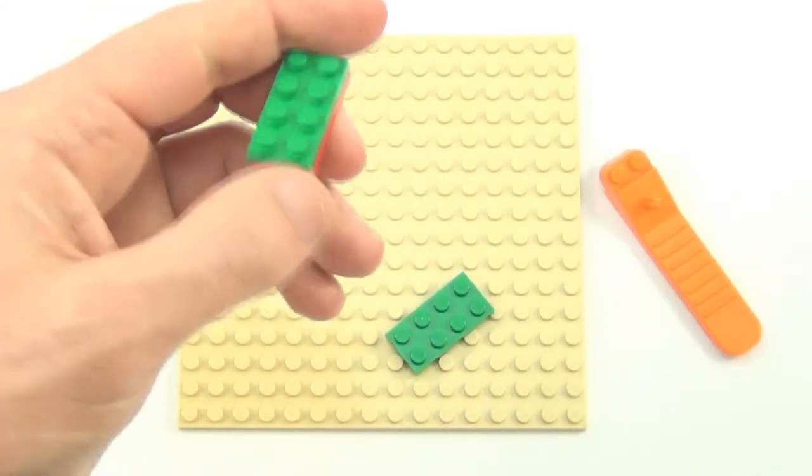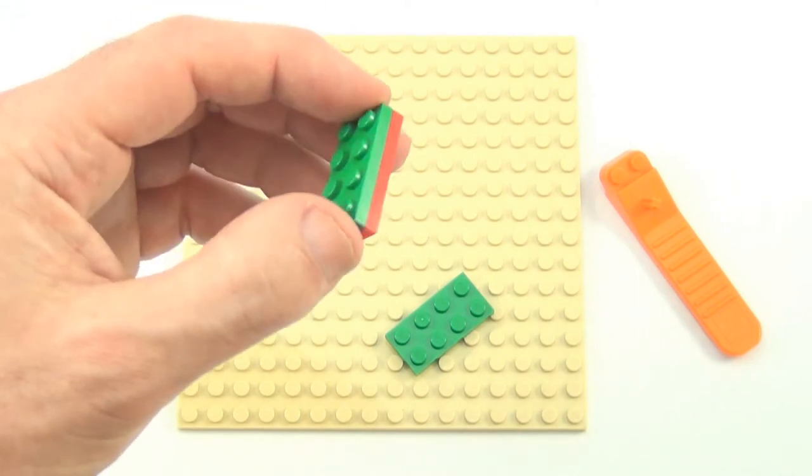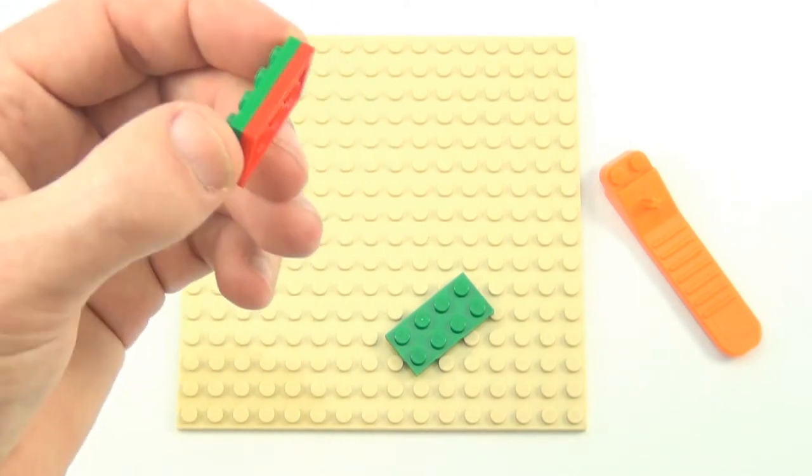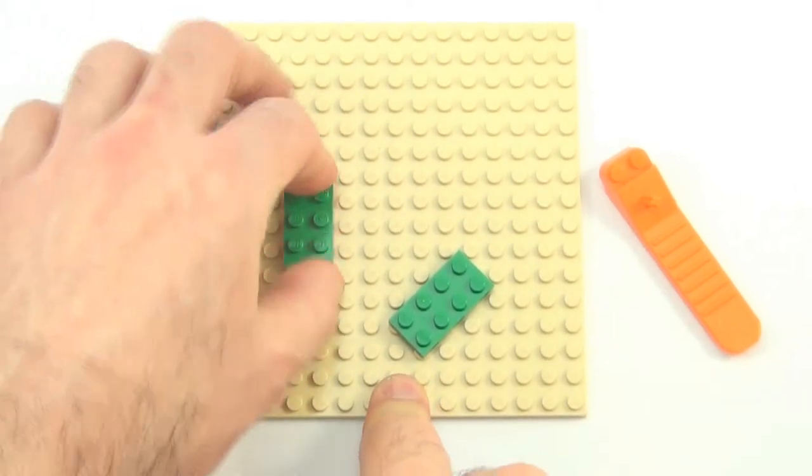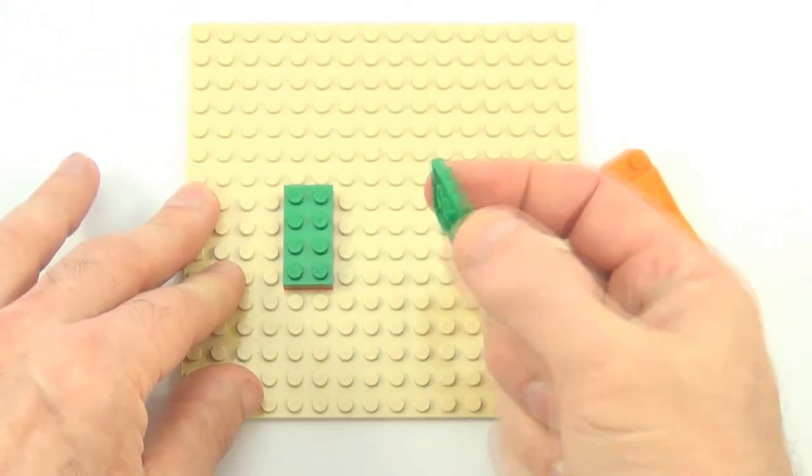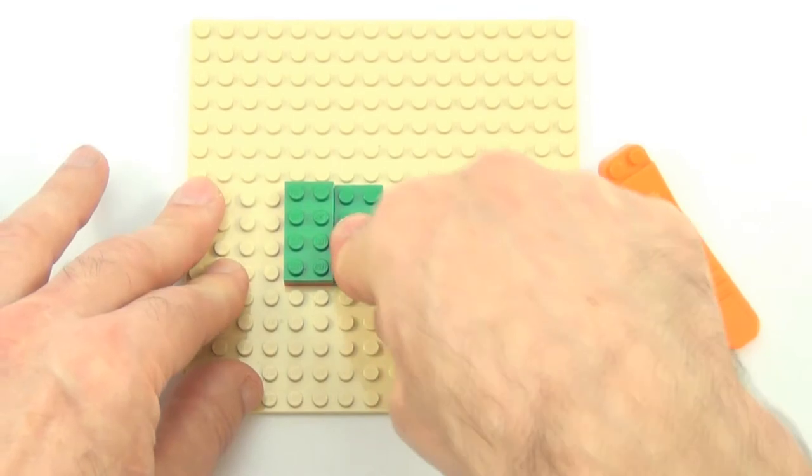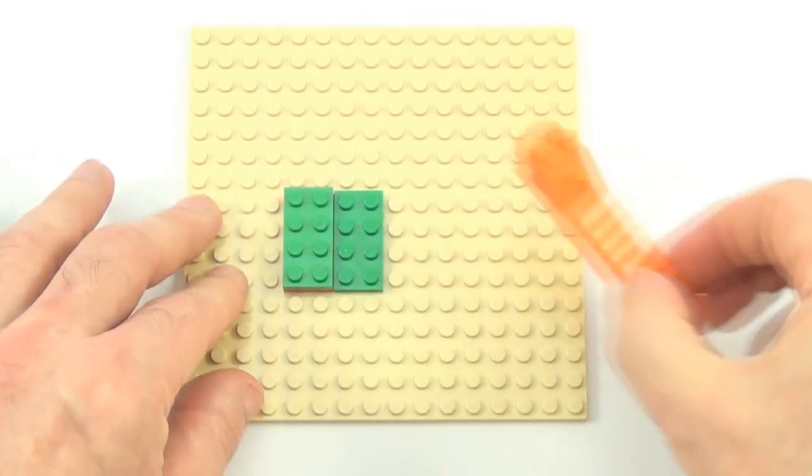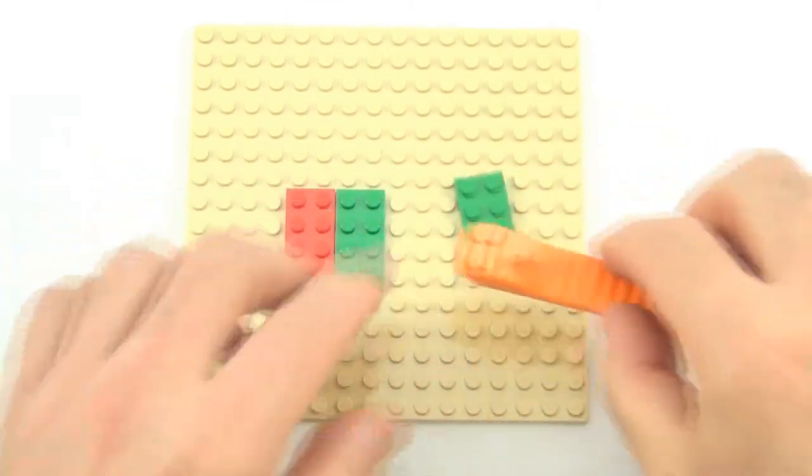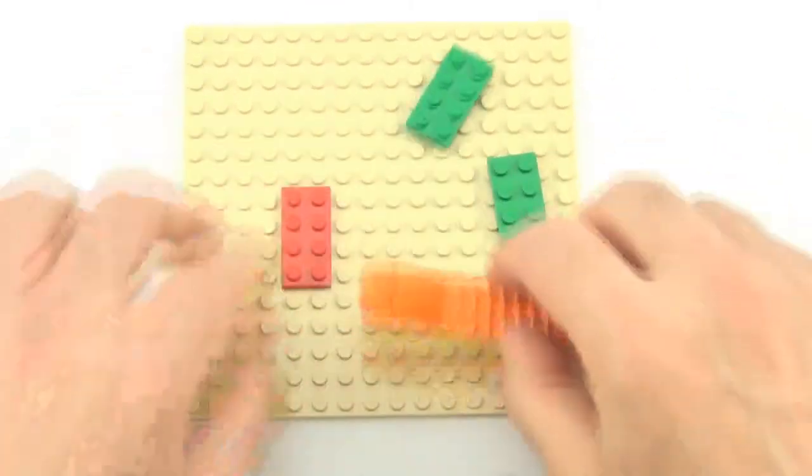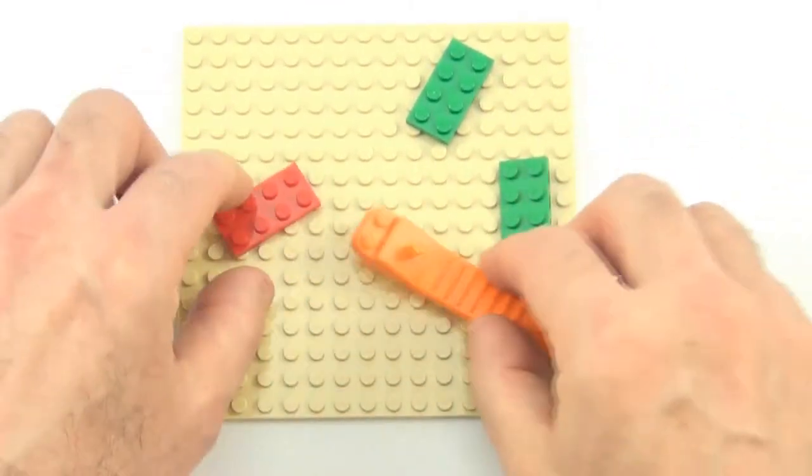A method of separating two plates if you only have one brick separator is to simply push them down into a base plate, grab a third plate, push that down firmly in front of the other two, pick up your brick separator, then you should be able to fairly easily separate all your plates.